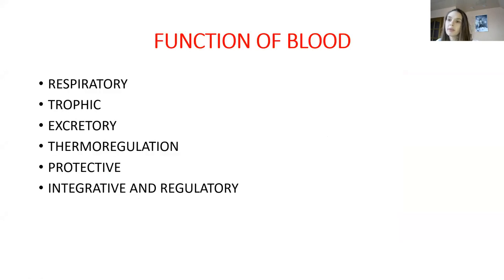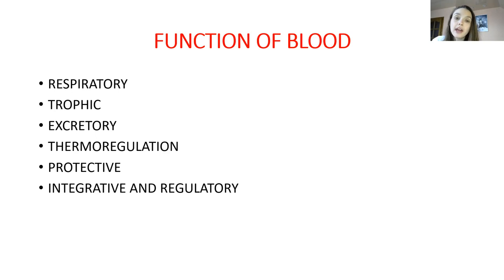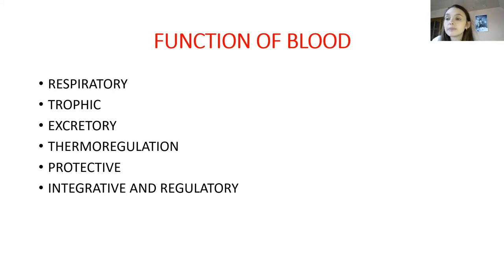What are the main functions of the blood? The first is respiratory function — red blood cells are responsible for delivering oxygen to tissues and carbon dioxide from the tissues to the lungs. Trophic function is responsible for delivering nutrition to the tissues and cells. Excretory function delivers waste products to excretory organs like the kidneys or liver. Thermoregulation, protective function mainly done by white blood cells, and integrative and regulatory function responsible for transport of hormones to target cells.